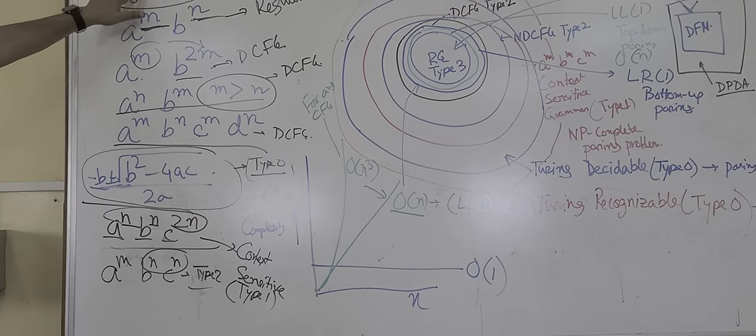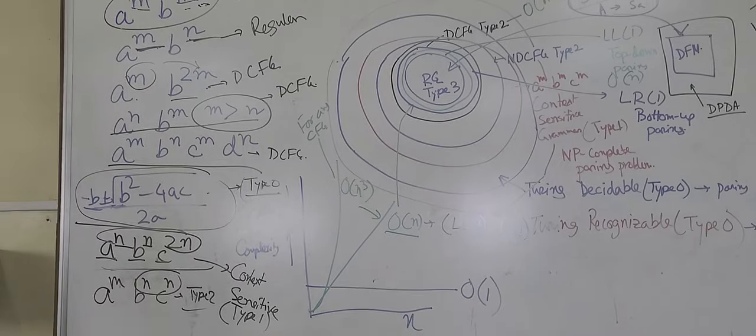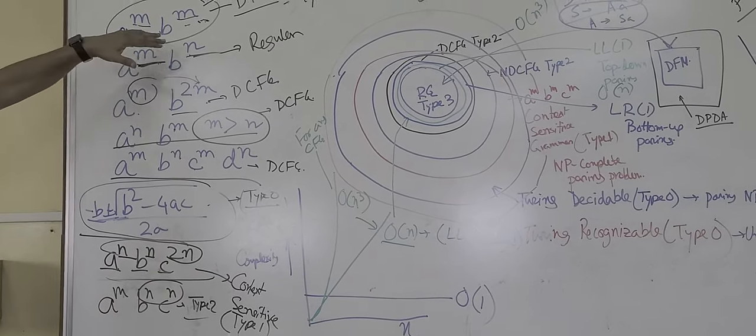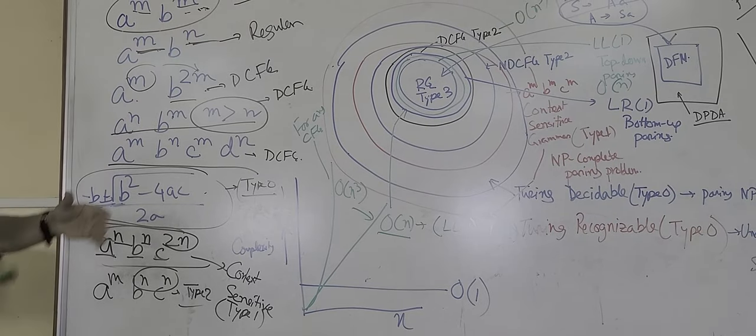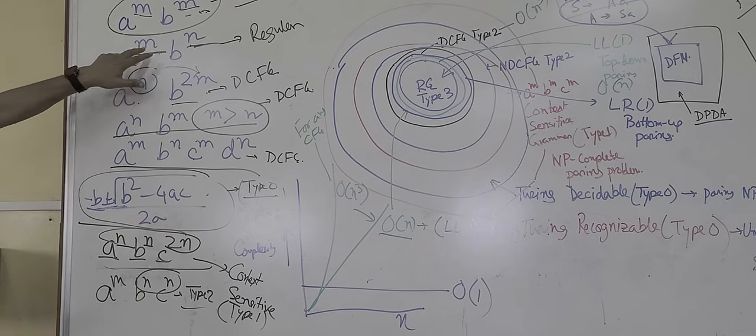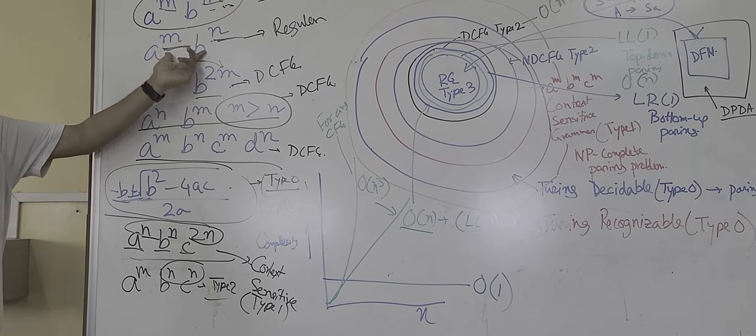A is the terminal A to the power A, B to the power A. I have to compare, I can always compare by a push term. So this is always a deterministic PDA machine. Now A to the power A, B to the power A, no relation between A and A. So this is a regular problem.